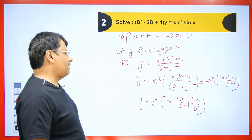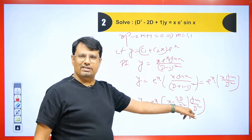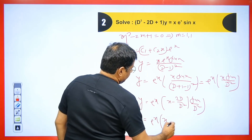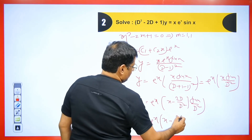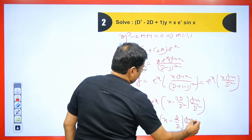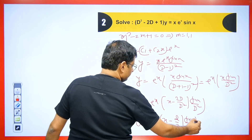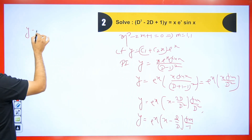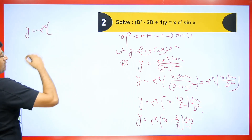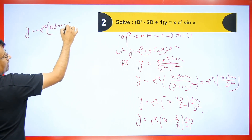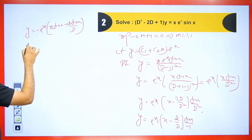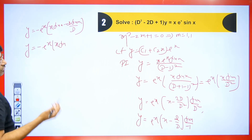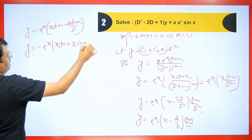Here we have sin(x)/D², so we put −1 in place of D². Taking −1 to the front, y = −eˣ · [x·sin(x) − 2·sin(x)/D]. The operator (1/D) means integration, so the integration of sin(x) is −cos(x). This becomes −eˣ · [x·sin(x) − 2·(−cos(x))], giving −eˣ · [x·sin(x) + 2·cos(x)].